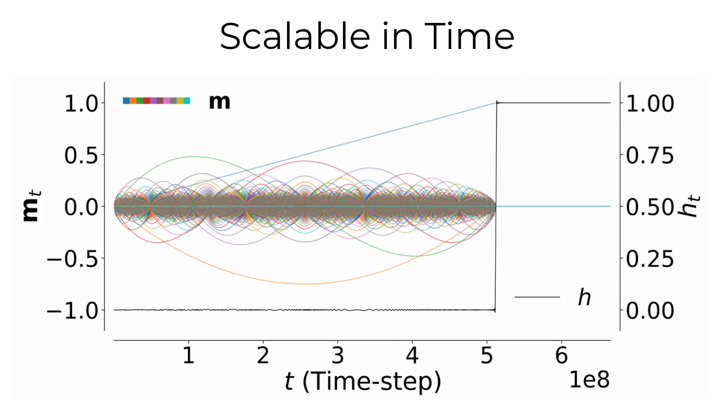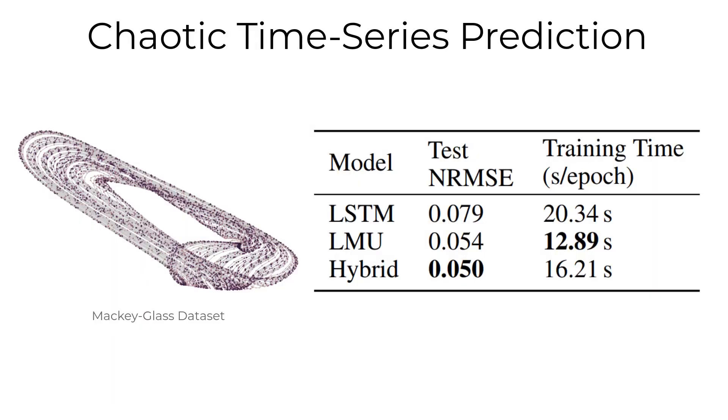In addition, we have shown that a deep temporal hierarchy of LMUs outperforms an equivalent stack of LSTMs in predicting a nonlinear chaotic time series. Interestingly, interleaving the two networks produces the lowest prediction error on this task.